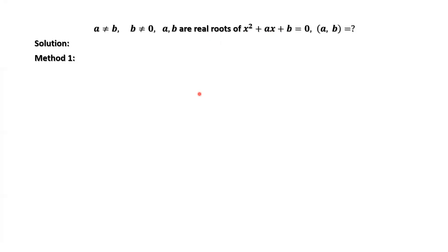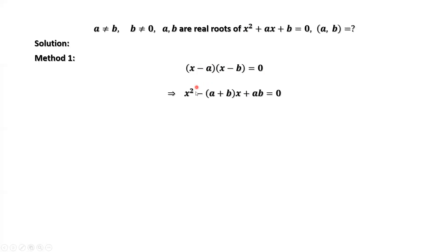Because a and b are two roots of this quadratic equation, then we have x minus a times x minus b equals zero. Expanding the left-hand side, we have x squared minus (a plus b)x plus ab equals zero.